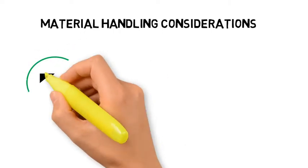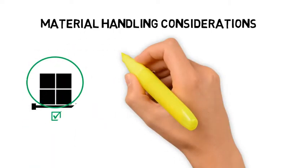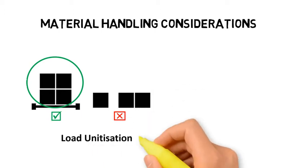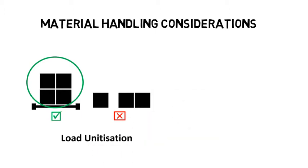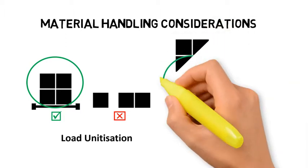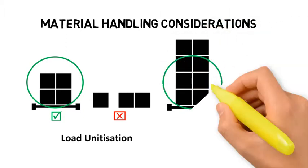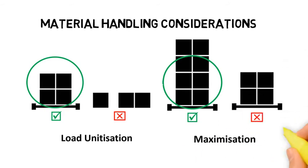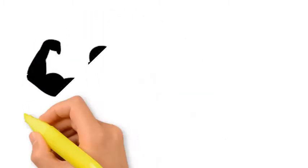Companies need to evaluate this trade-off. From a process point of view, companies should always try to incorporate load unitization and maximization into material handling processes to increase efficiency. Load unitization refers to moving goods in a unit, such as a pallet or a container, from point to point versus in loose cartons or packages. Maximization refers to moving goods in larger loads where possible — as the load size increases, the number of trips decreases.